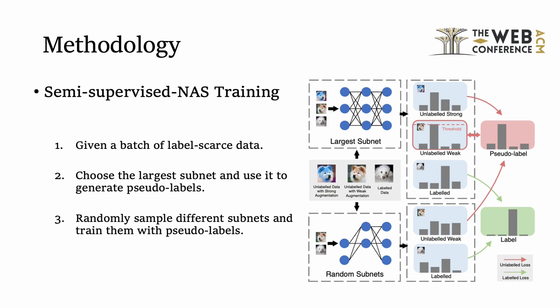As for supernet training, we provide a semi-supervised NAS training method. Given a batch of label-scarce data, we first choose the largest network from the supernet and use it to generate a bunch of pseudo-labels, and then we randomly sample different networks from the supernet and train them with those pseudo-labels.